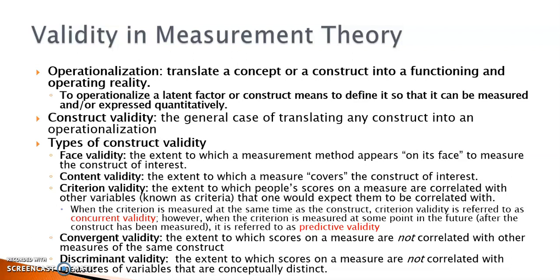The correlation between their SAT scores and high school GPAs is an example of concurrent validity because they both measure students' academic performance concurrently but from different perspectives. When the criterion is measured at some point in the future after the construct has been measured, it is referred to as predictive validity. If the SAT scores are used to predict students' academic performance in college, the correlation between their SAT scores and the cumulative GPA at the end of their freshman year provides evidence for predictive validity.